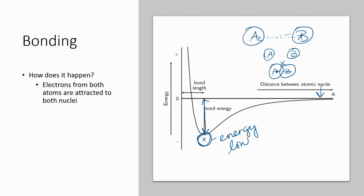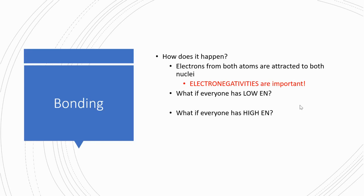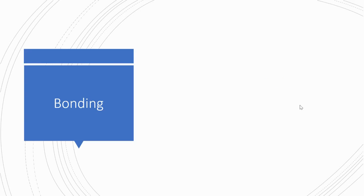If they get too close together, then their nuclei start to repel. So electronegativity becomes really important here, and we have three situations. We could have two atoms that both have low electronegativity, two atoms that both have high electronegativity, or one atom with low electronegativity and one with high. We're going to look at each of those situations separately.